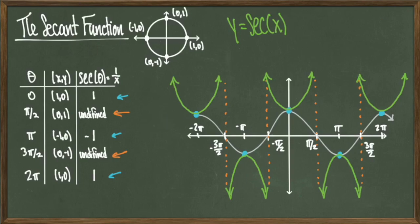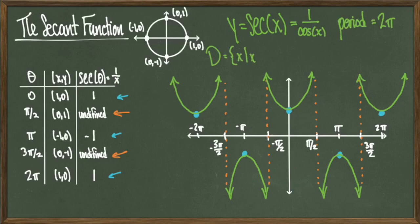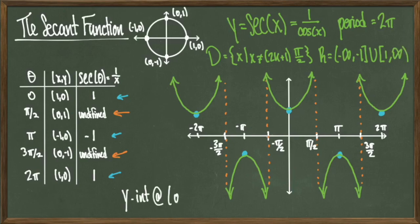Erasing the cosine reference, the domain of secant of x is all real numbers x except x values equal to some odd number times pi over 2. The range is negative infinity to negative 1 union with 1 to positive infinity. This function is also periodic with period equal to 2 pi, and has a y-intercept at the point (0, 1).